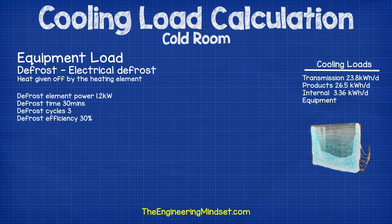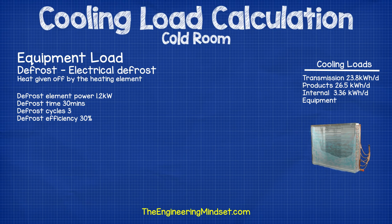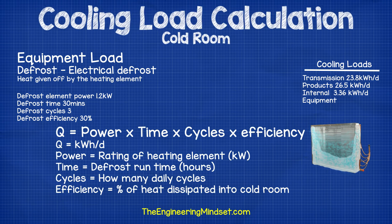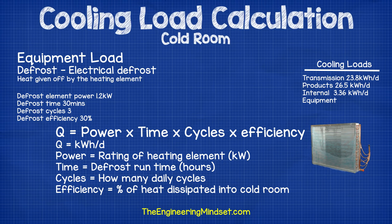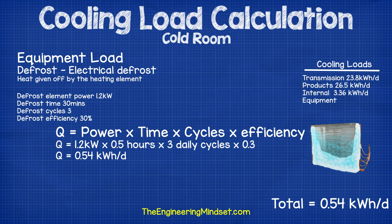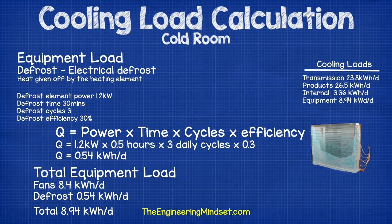Now we calculate the heat load caused by defrosting the evaporator. Our cold room uses an electric heating element rated at 1.2 kilowatts, running for 30 minutes three times a day, with a transfer efficiency of 30% — meaning 30% of the energy consumed is actually transferred into the cold room. Using the formula q equals power multiplied by time multiplied by cycles multiplied by efficiency, this comes out to 0.54 kilowatt hours per day. The total equipment load — fan heat plus defrost heat — is therefore 8.94 kilowatt hours per day.